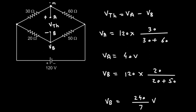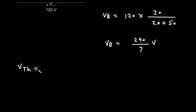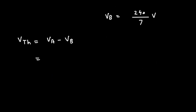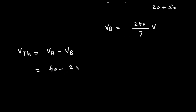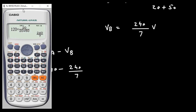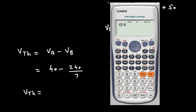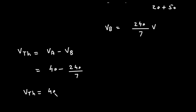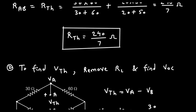Now, VTH is equal to VA minus VB. The value of VA is 40 volt and VB is 240/7 volt. So VTH = 40 − 240/7, which equals 40/7 volt. So VTH = 40/7 volt.